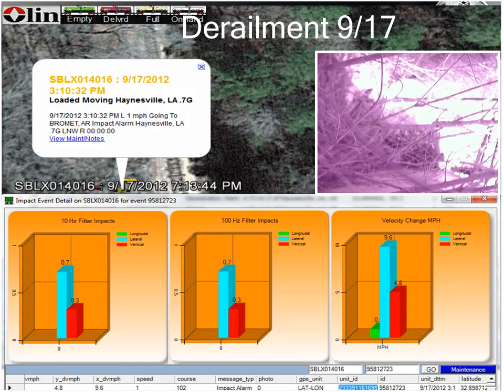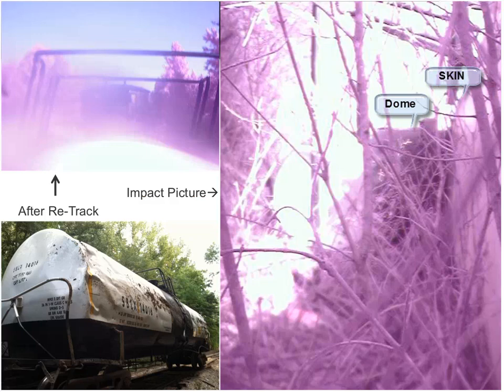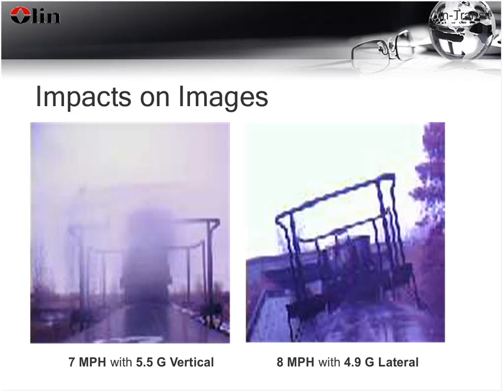A 2012 derailment event was a slow-occurring event. An image returned within three minutes of the derailment showed trees horizontal rather than vertical — the car was clearly on its side. A blown-up and rotated version of the image revealed, to the left of the word 'dome,' a round white image indicating the dome lid had come open in the derailment, though it appeared no product was leaking. Images are really helpful.